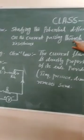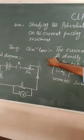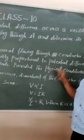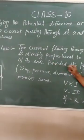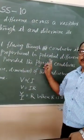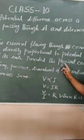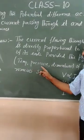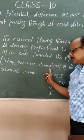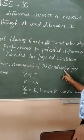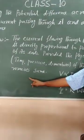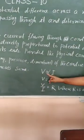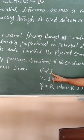This is Ohm's law. Ohm's law says the current flowing through a conductor is directly proportional to the potential difference at its ends, provided the physical conditions - that is temperature, pressure, dimensions of the conductor - remain the same.